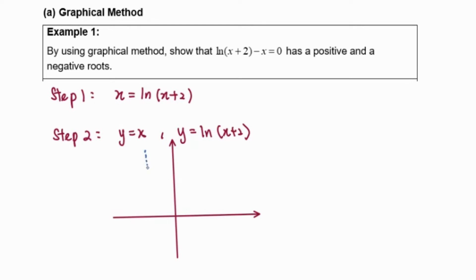we will have an asymptote at x = -2. This is our ln graph.